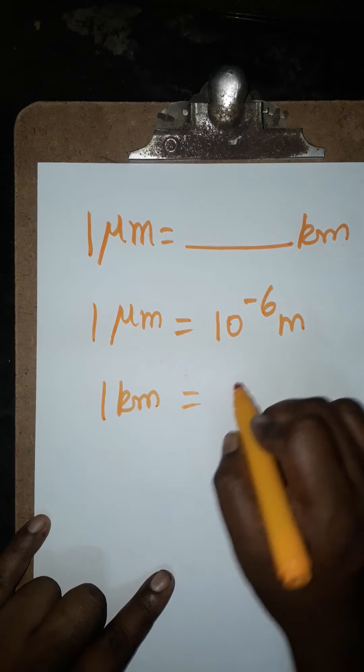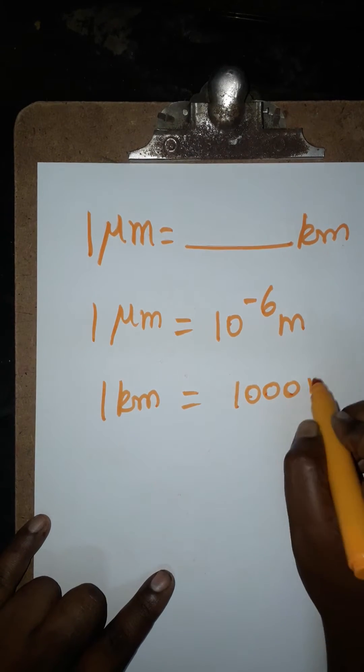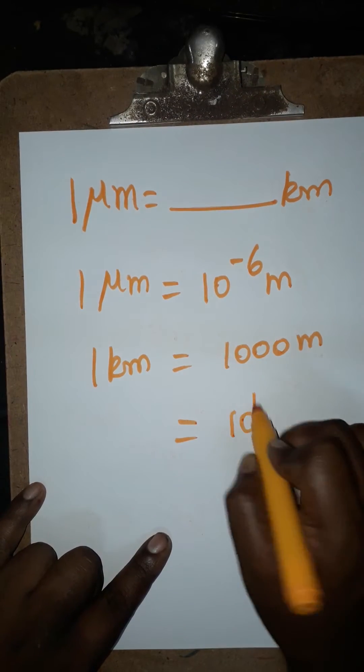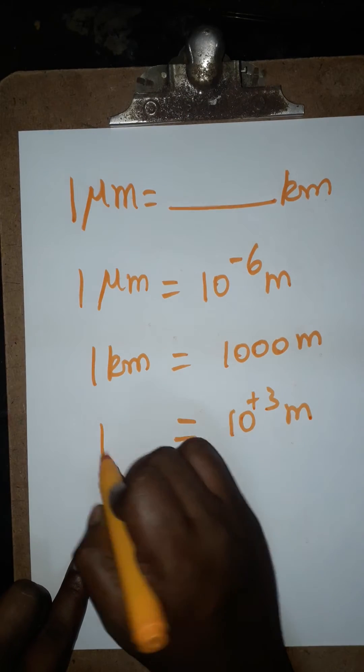1 kilometer is 1000 meters. We can write 1000 as 10 power plus 3, so 10 power plus 3 meters equals 1 kilometer.